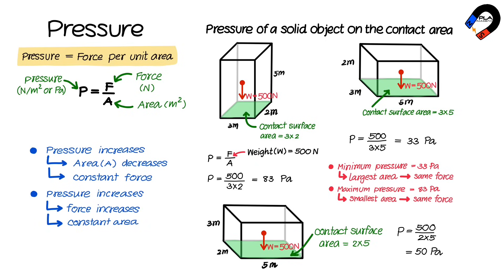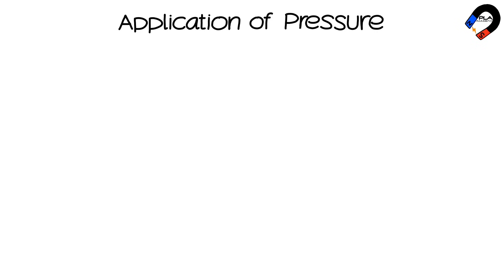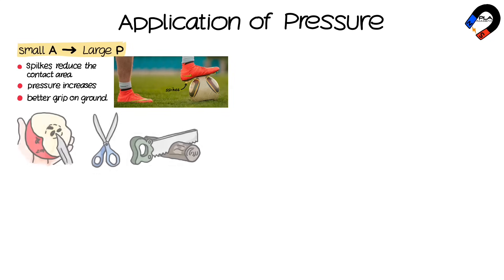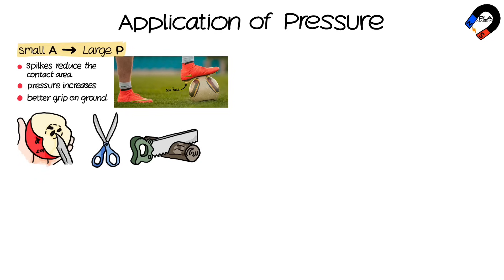An application of pressure in everyday life is when large pressure is created due to a small area. For example, the spikes on soccer shoes reduce the area of contact, which increases the pressure, providing soccer players with a better grip on the ground.